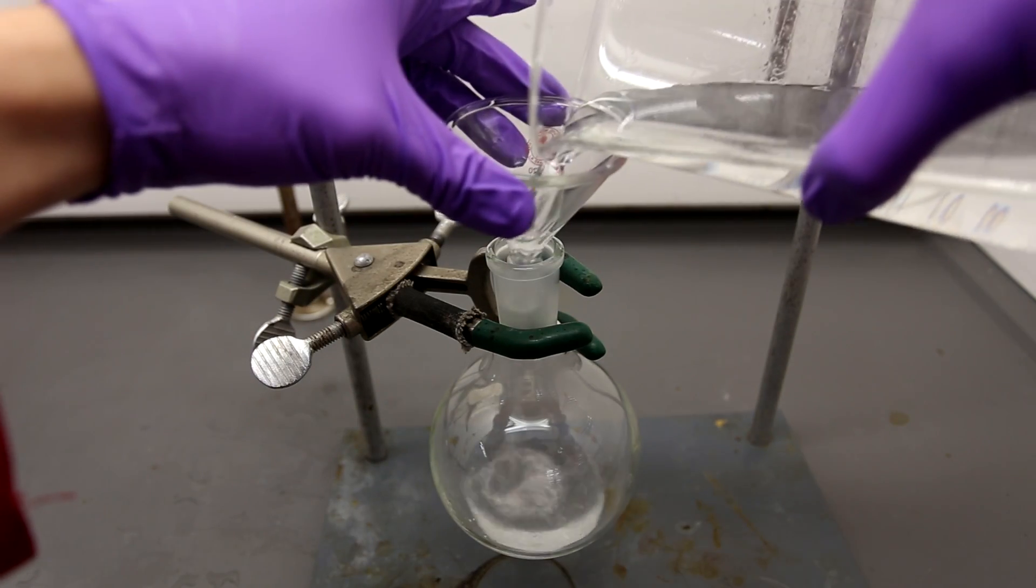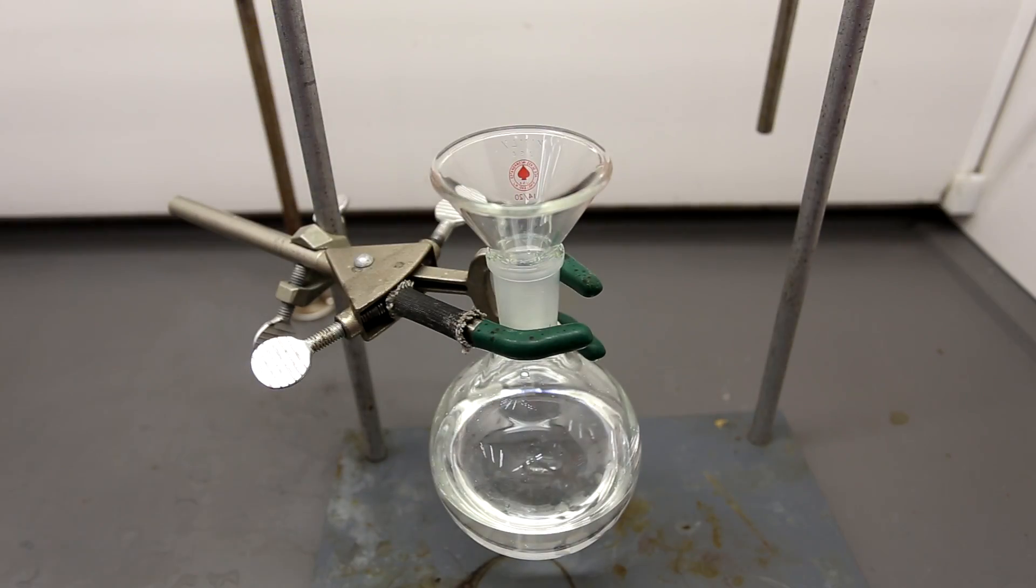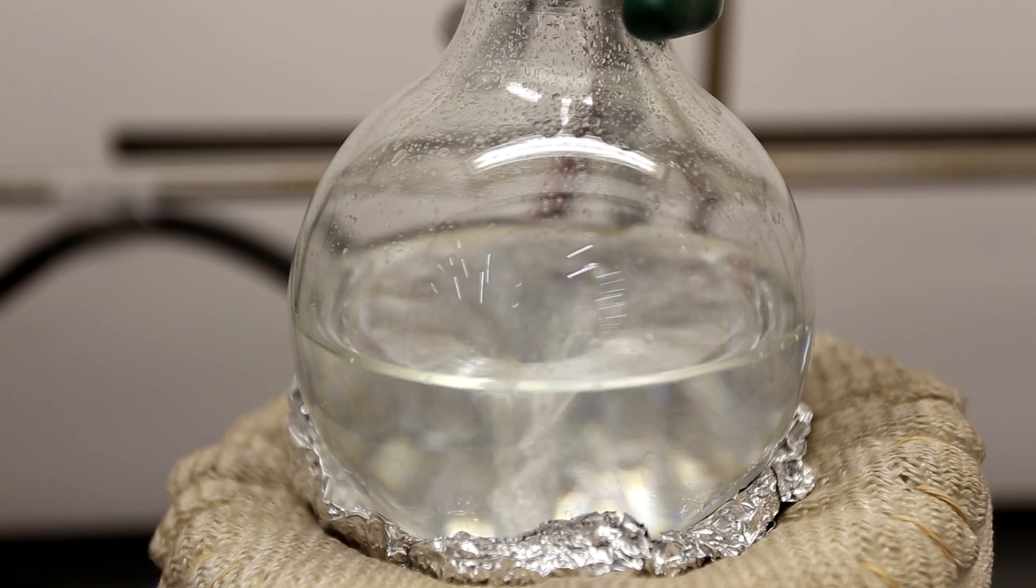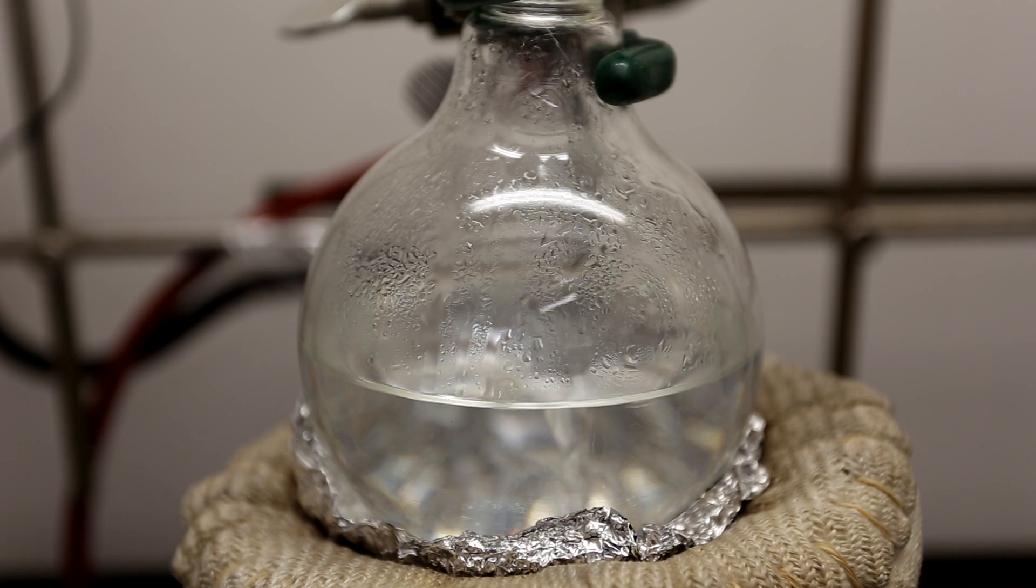After the addition of the sulfuric acid was completed, the solution was transferred to a round bottom flask for distillation. To obtain high concentration and high purity hydrobromic acid, you're going to have to carry out two distillations.